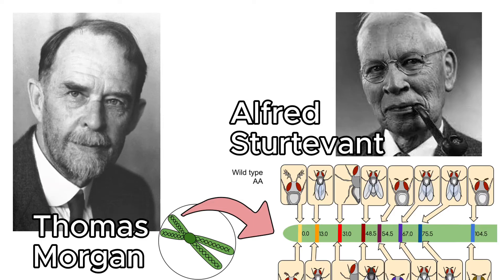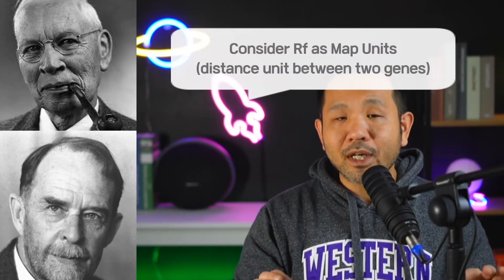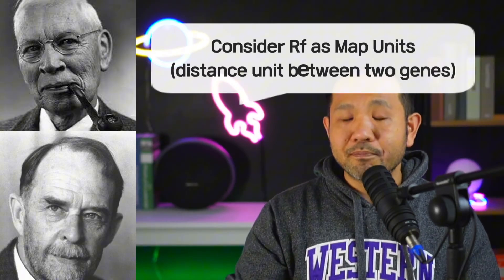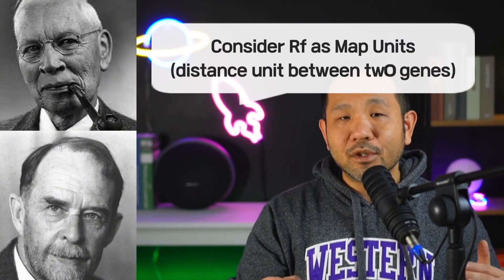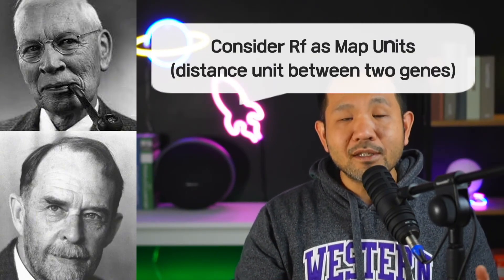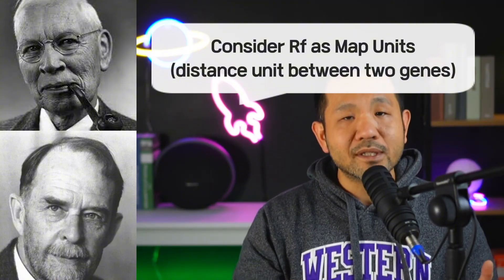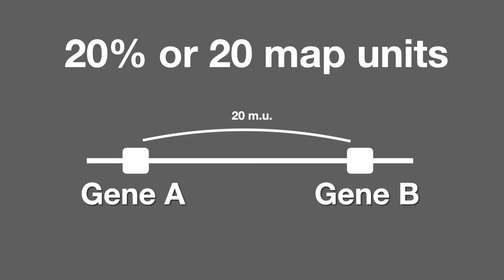This is what Morgan's lab recognized. He said you can consider recombination frequencies as something called MAP units — a distance unit between two genes directly related to recombination frequency. In our example, we can now draw that chromosome, place genes A and B on it, and write 20 MAP units between loci A and loci B, where those two genes reside.